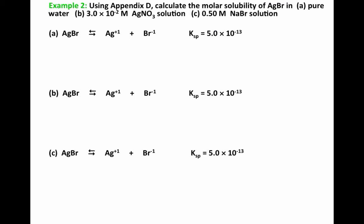We're going to look at an example. Using Appendix D, calculate the molar solubility of silver bromide in pure water, a 3.0 times 10 to the negative second molar silver nitrate solution, and a 0.50 molar sodium bromide solution. So if we start with part A,